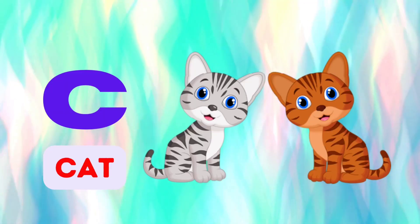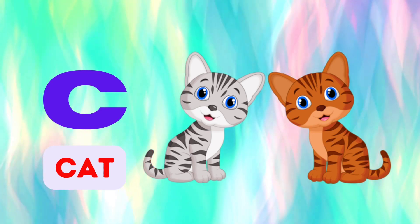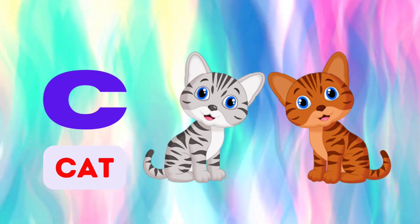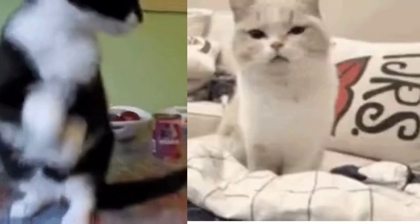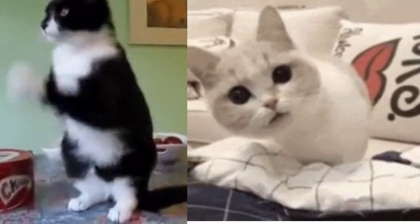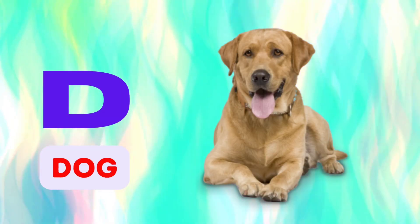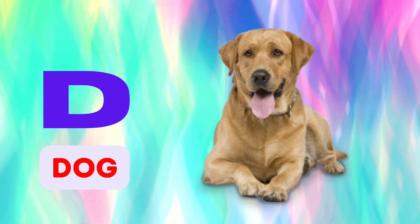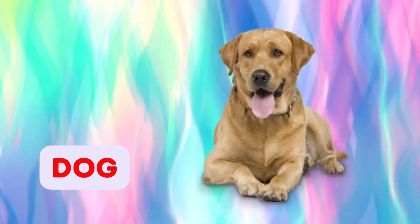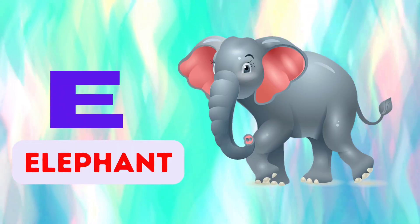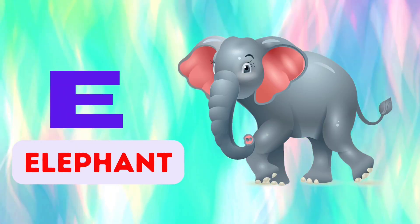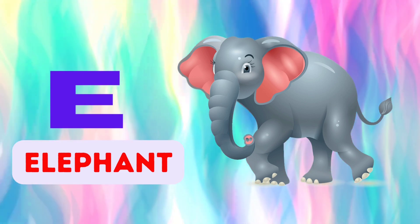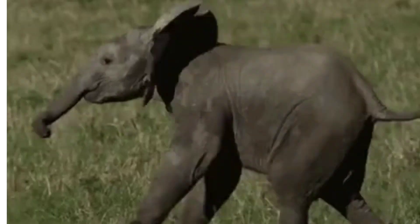C is for Cat. D is for Dog. E is for Elephant.